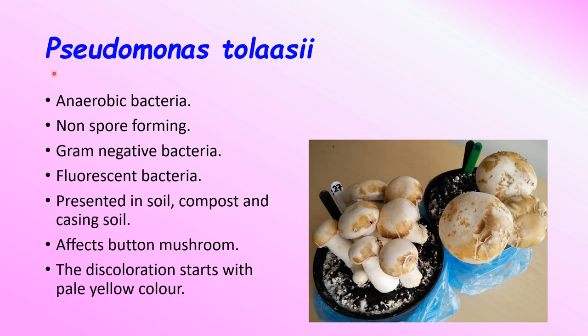The special characteristics of Pseudomonas tolaasii bacterium: it is an anaerobic bacteria, which means it does not require oxygen for growth. It is a non-spore-forming, gram-negative bacteria. It has very thin silver flagella, and it is a fluorescent bacteria — meaning it will glow yellow-green or blue-green in color under UV light exposure. It is highly present in soil, compost, and casing soil, and majorly affects button mushrooms.